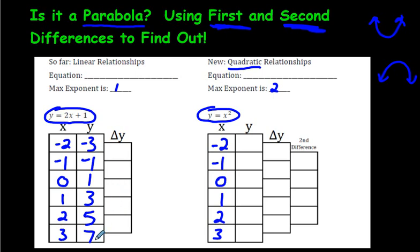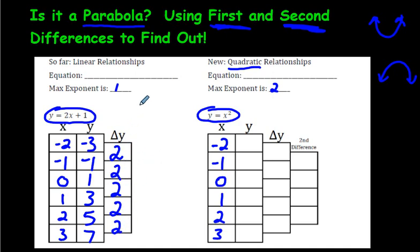First differences are when you start at the bottom and subtract, moving upwards. So 7 minus 5 is 2. 5 minus 3 is 2. 3 minus 1 is 2. Careful: 1 minus negative 1 — remember, two negatives make a positive — so 1 minus negative 1 is still 2. And negative 1 minus negative 3 is still 2. These numbers are all the same, so that means this is linear — it's a straight line. There's no need to do second differences.